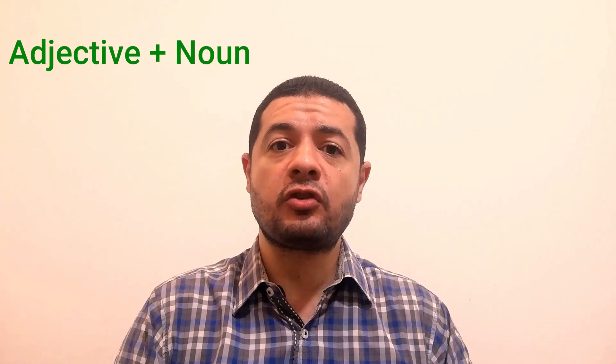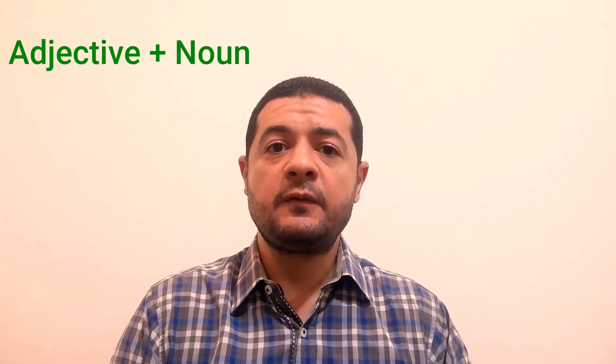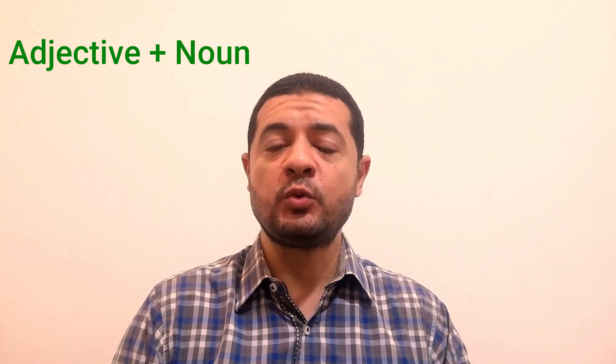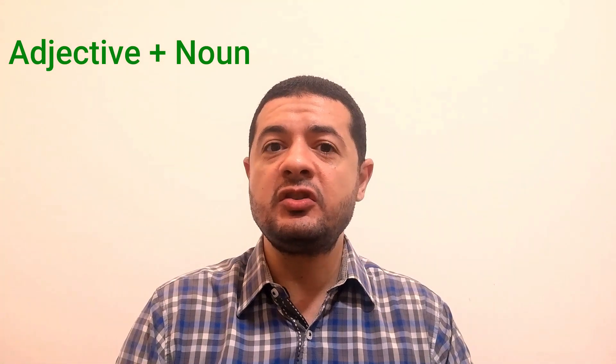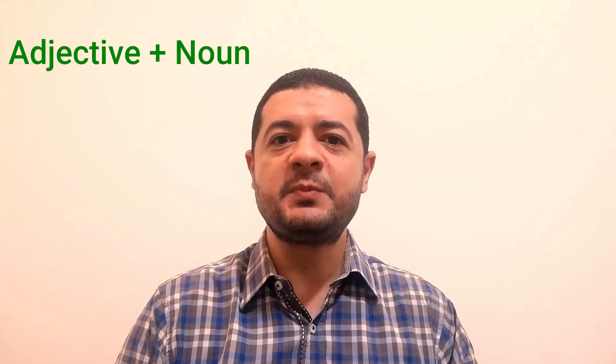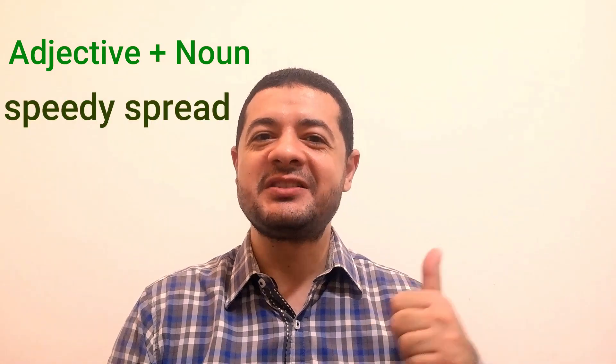Let's now look at the sentences and see what the correct form should be. In the first sentence, the candidate said 'the speed spread of the virus.' If you are talking about the spread of a virus and you would like to describe this spread, the word 'spread' is a noun. If I want to modify or describe this noun, I should use an adjective. So instead of using the word 'speed,' which is a noun, I should use the adjective form — the adjective from 'speed' is 'speedy.'